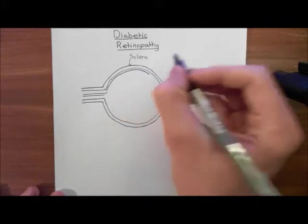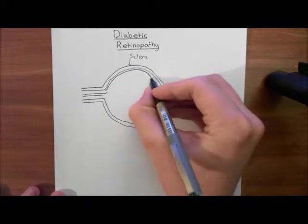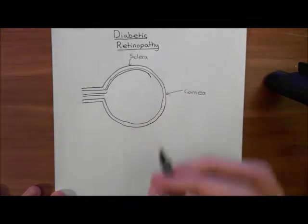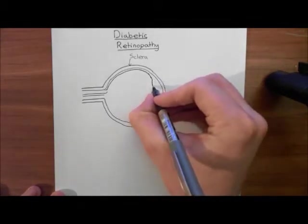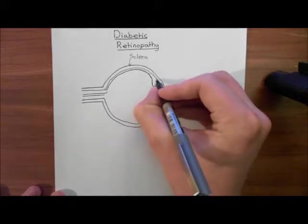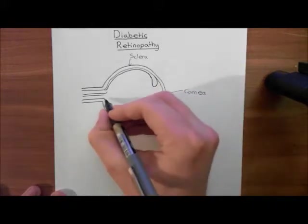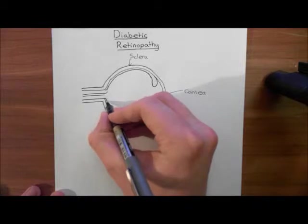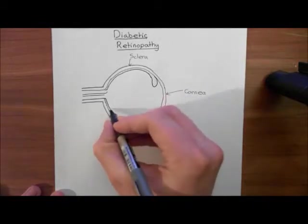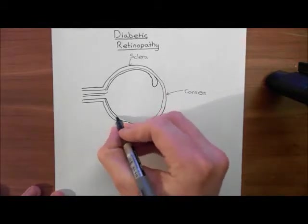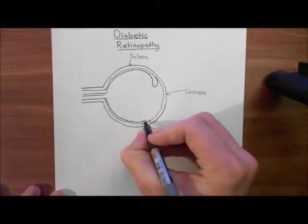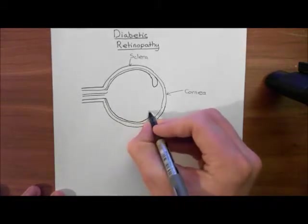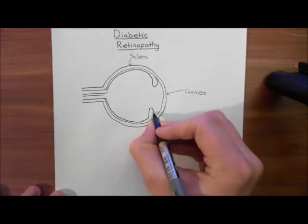So here it comes around, and the choroid is then continuous with the ciliary body. Now where am I going to put the ciliary body? How far should I go? I'll come out like here. So this is then the ciliary body here.